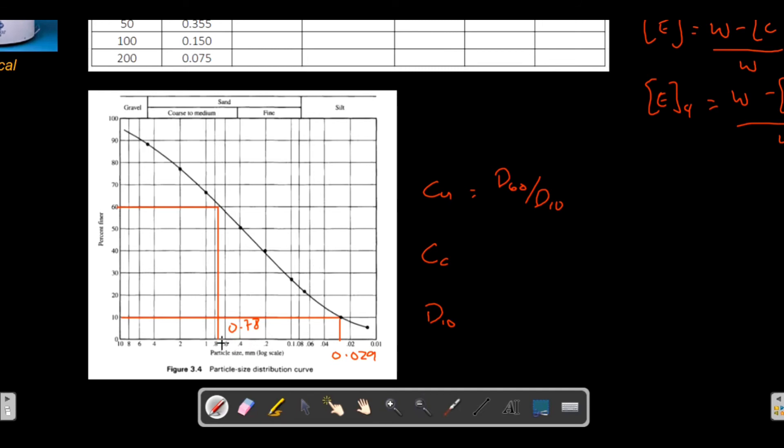And then we have the coefficient of curvature - D30 squared divided by D60 times D10. You now have D10 and D60, you just have to find D30. D30 is somewhere at 0.13, which means that 30 percent of your sample is finer than 0.13 millimeters.